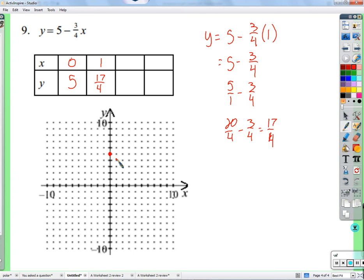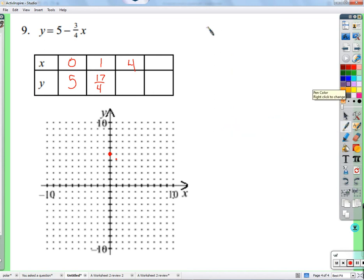The thing is, when I go to graph this, we got 1 and 17 over 4. So that would be a little more than 4, 4 and 1 fourth. So when it comes to graphing, it's just a little more guesswork. Is there something we can plug in for x where we can just land right on the grid? 4.